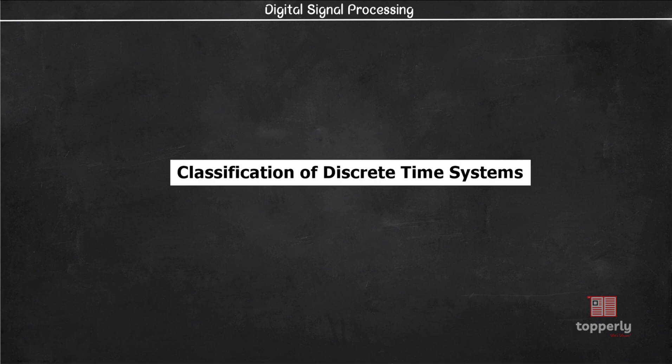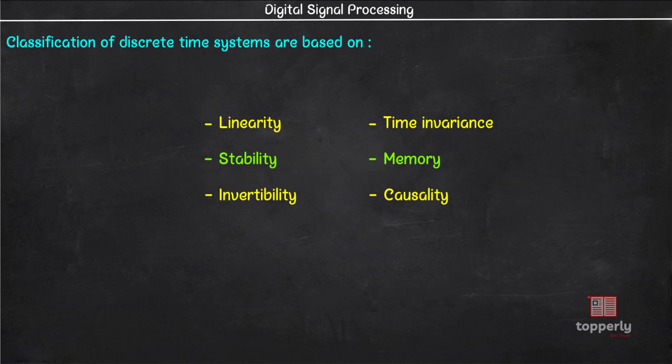Hey everyone, welcome back to DSP lectures. We were discussing discrete time systems for the last few videos and we learned the different properties on which discrete time systems are classified. We learned about linear and nonlinear systems in detail in the last video. In this lecture we will see the next property which is stability. So let us start our lecture.